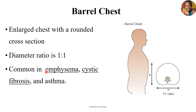Barrel chest is commonly found in conditions such as emphysema — a disease involving destruction of parenchymal tissues — as well as cystic fibrosis and asthma. In all these conditions, the client can develop a barrel chest.